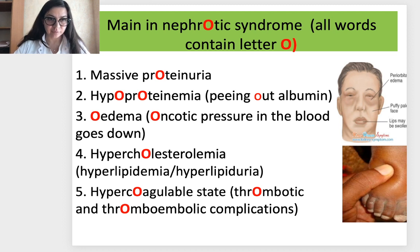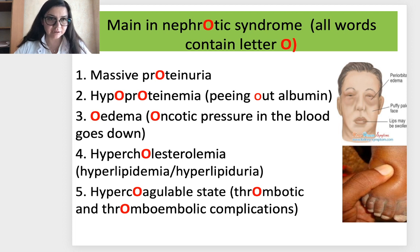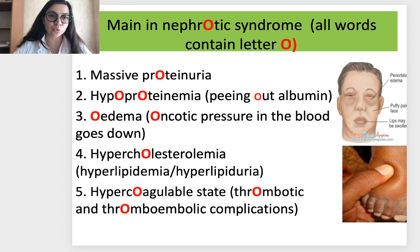To remember nephrotic syndrome, note that two important syndromes in nephrology differ by just one letter. All main symptoms of nephrotic syndrome contain the letter O: massive proteinuria, hypoproteinemia with peeling out of albumin, edema due to decreased oncotic pressure in blood, hypercholesterolemia, hyperlipidemia and even hyperlipiduria, and a hypercoagulable state with risk of thrombotic and thromboembolic complications.